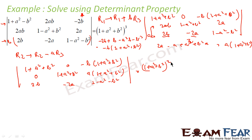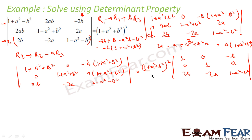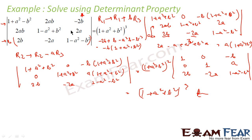Now we can take out 1 plus a squared plus b squared from two rows, giving us 1 plus a squared plus b squared whole squared as a common factor. After extraction, the matrix becomes: row 1 is 1, 0, minus b; row 2 is 1, 1 plus a squared plus b squared, a; row 3 is 2b, minus 2a, 1 minus a squared minus b squared. The critical point was to analyze the determinant and convert it into the 1 plus a squared plus b squared form using the row operations.